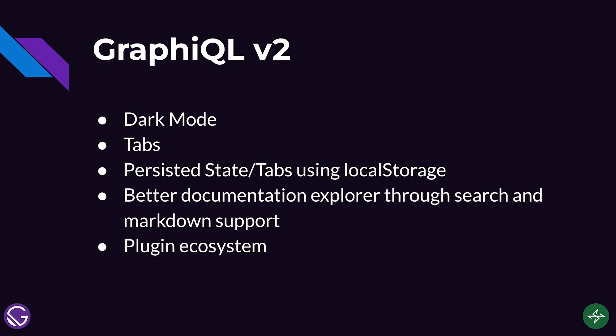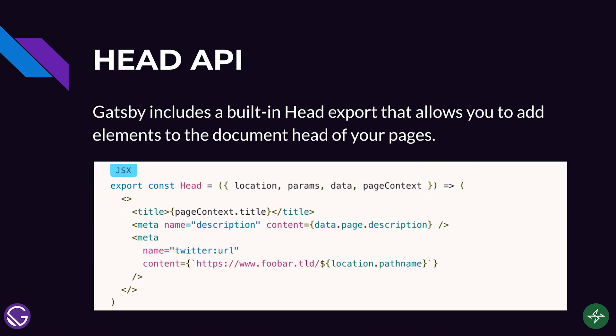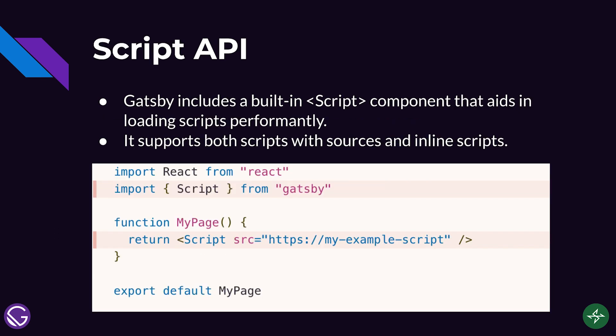Next, in GraphQL version 2, they added dark mode, support for multiple queries, persisted state using local storage, better documentation explorer through search and markdown support, and a plugin ecosystem. Next is the Head API. If you were working with the free plugin React Helmet before, now you can use the new Head API. Compared to React Helmet or other similar solutions, Gatsby Head is easier to use, more performant, has a smaller bundle size, and supports the latest React features. Lastly is the Script API — Gatsby includes a built-in script component that aids in loading scripts performantly, supporting both scripts with sources and inline scripts.